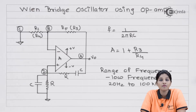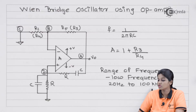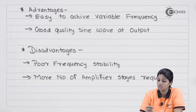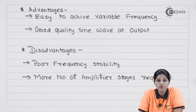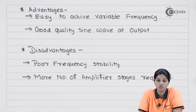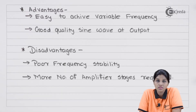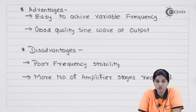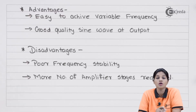RC oscillators are basically used for providing low-frequency outputs and are therefore also called audio oscillators. The range of frequency provided by the Wien bridge oscillator is in the range of 20 Hz to 200 kHz. The first advantage of the circuit is easy variable frequency — since frequency depends on the value of R and C, changing the values in the frequency-sensitive arm easily varies the frequency. The second advantage is a good quality sine wave at the output.